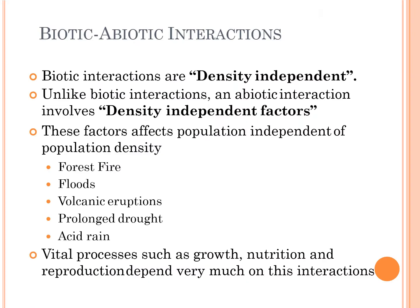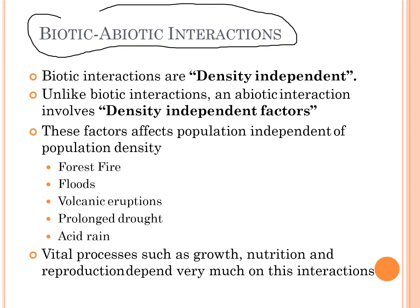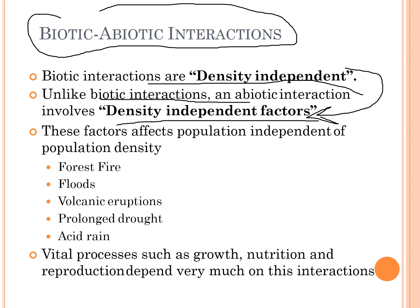Regarding biotic and abiotic interactions: abiotic interactions are density independent. This is an important difference — abiotic factors involve density-independent factors. Biotic factors include all functions performed by living organisms in the cycle, while abiotic factors refer to physical and climatic conditions. Both types of factors affect population independent of population density.